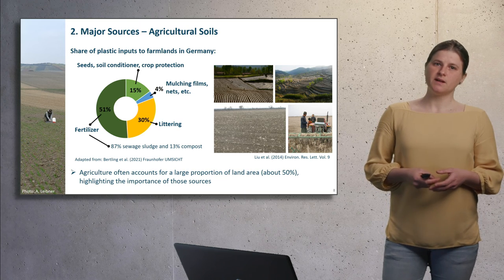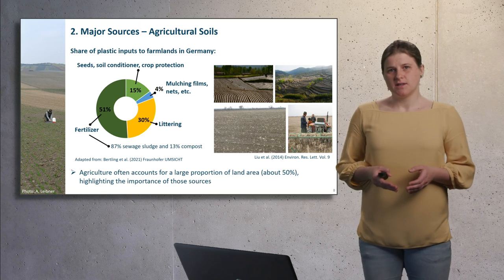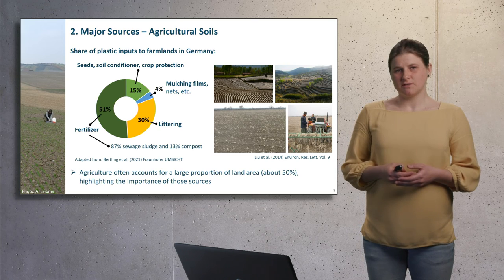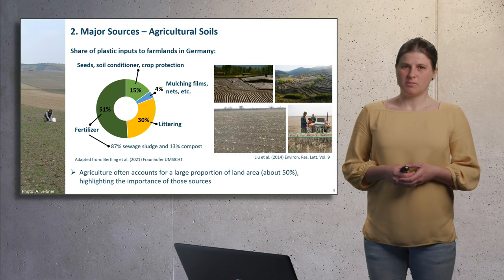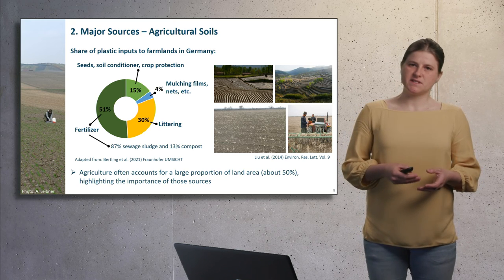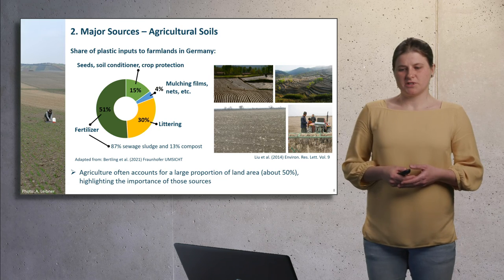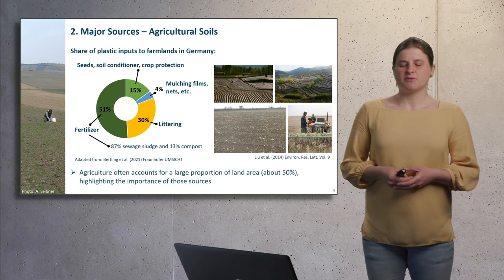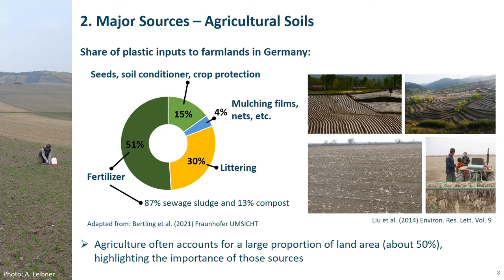In Germany, microplastic-containing fertilizer is thought to be responsible for 51% of plastic inputs to farmlands. Microplastic coming from the pelleting of seeds, soil conditioners or crop protection contributes another 15%. Littering is estimated to contribute another 30%, and 4% are estimated to come from the fragmentation of so-called agricultural plastic applications, for example mulching films shown in the picture in this slide.